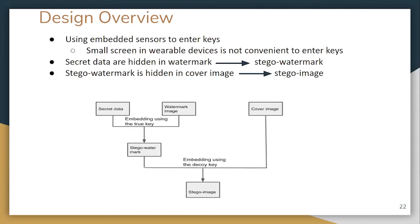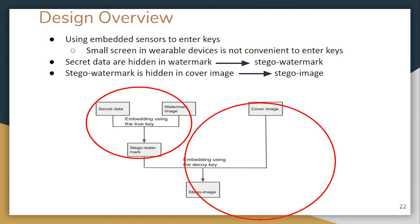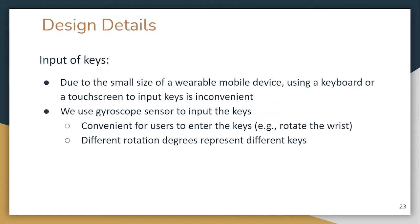In the design overview, we use embedded sensors to enter keys, since the small screen of a wearable device is not convenient for key input. Specifically, we use a gyroscope — which measures rotation rate on x, y, and z axes — calculating the rotation degree over a fixed time interval and using that value as the key. Compared to designing a keyboard on a wearable device, this scheme is more convenient as users only need to rotate their wrist.